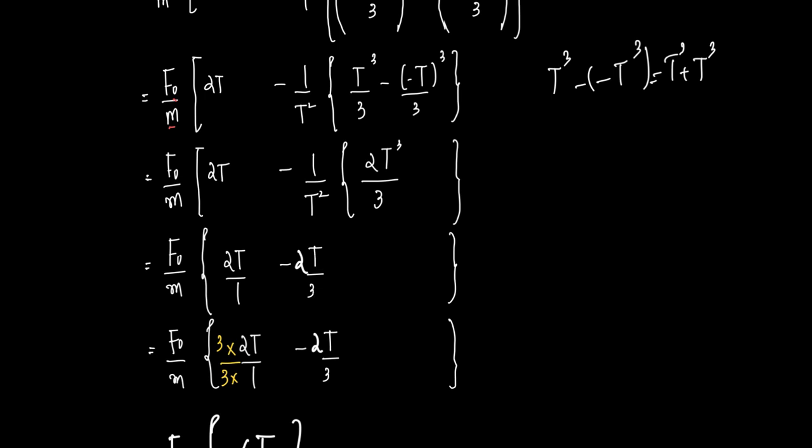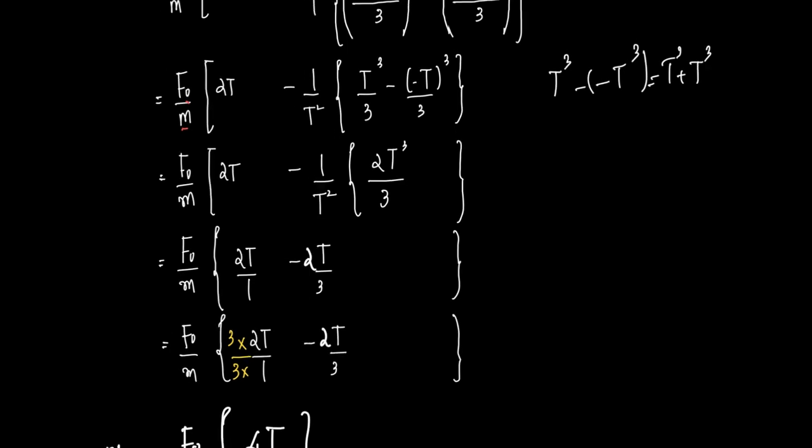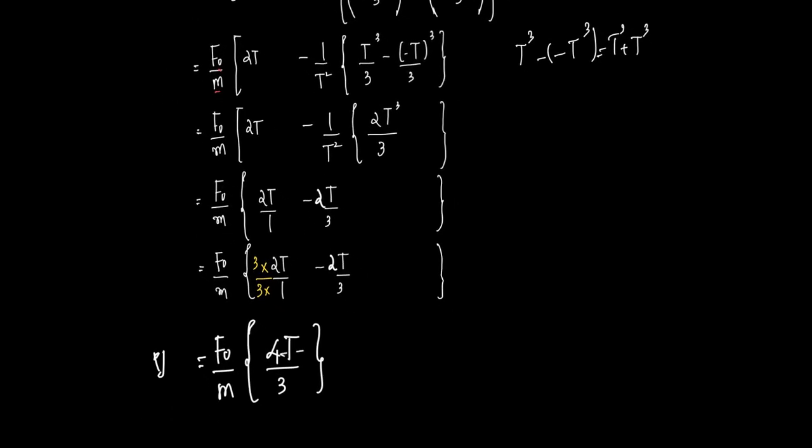Therefore v = F₀/m × 4T/3. That is the final answer. For the exam, you don't need to write this many steps — you can make things faster. It's a simple integral, but I've taken time to detail it since many students may find this integration tough the first time.